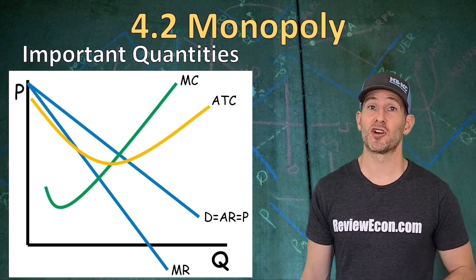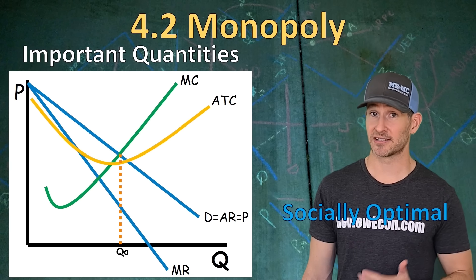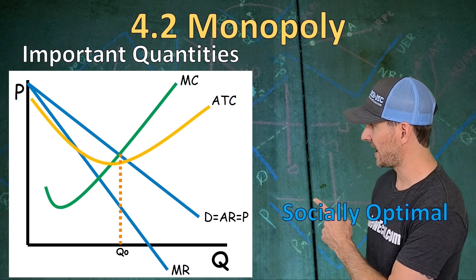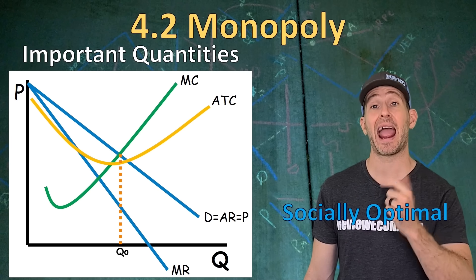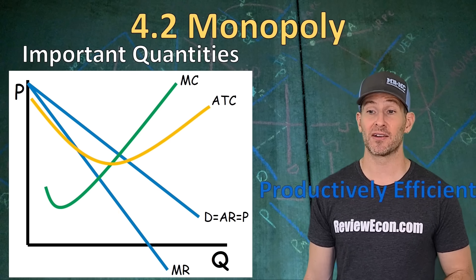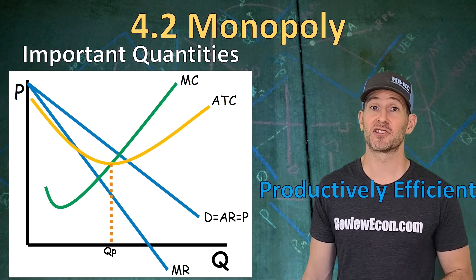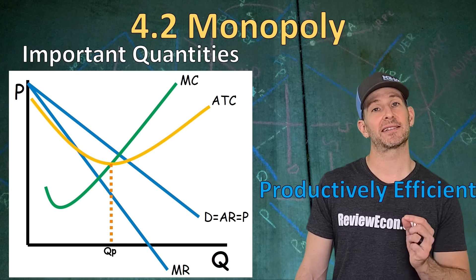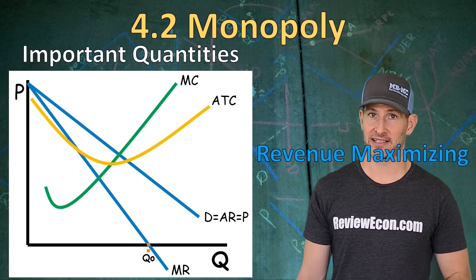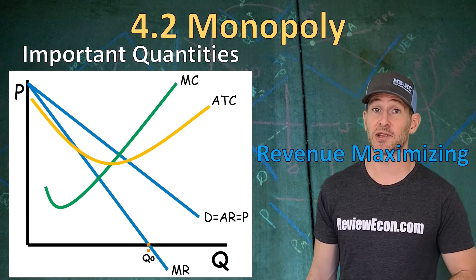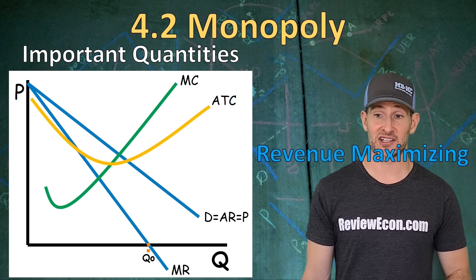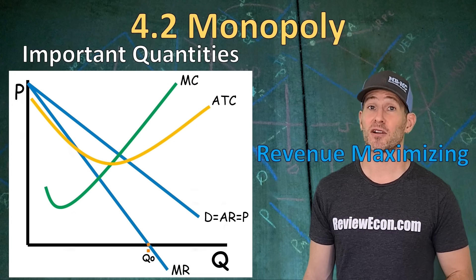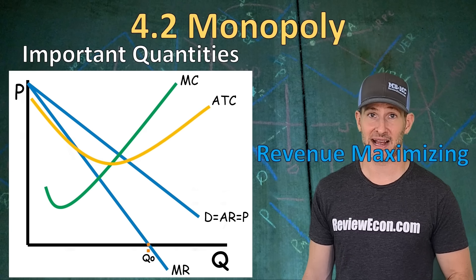Some important quantities that occasionally show up on the exam: first, socially optimal or allocatively efficient quantity — that's where price equals marginal cost, found at the intersection of marginal cost and the demand curve. Next, the productively efficient quantity — that is the minimum of the average total cost. Also, revenue maximizing: that's found where the marginal revenue curve intersects the axis, where marginal revenue is zero and total revenue is at its maximum.